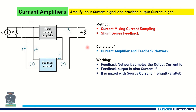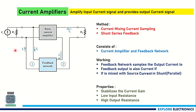The feedback network samples the output current I0 and the feedback output IF is also a current. The source current is mixed in shunt (parallel) manner. This stabilizes the current gain, and for a current amplifier the input resistance is low and the output resistance is high.